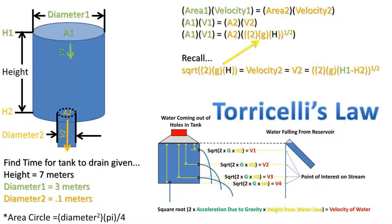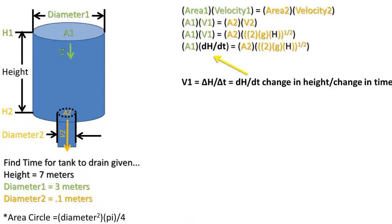I'll be notating the square roots as raised to the one-half power, which is equivalent to a square root. Now we need to define velocity 1, or the rate at which the fluid in the tank lowers over time. This is really just the delta in height, or change in height, divided by the delta of time, or the change in time.